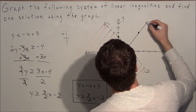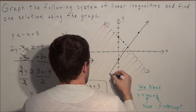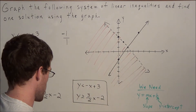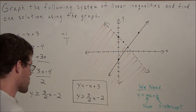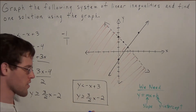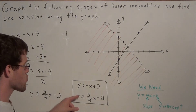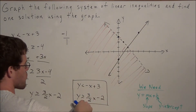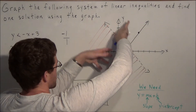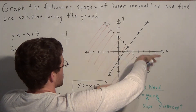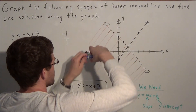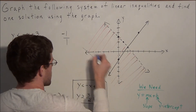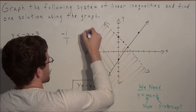We put arrows on either side to indicate the line goes on forever in either direction. Now I'll shade the second solution in a different color. Since y is greater than or equal to this line, we shade everything above the line, not below.